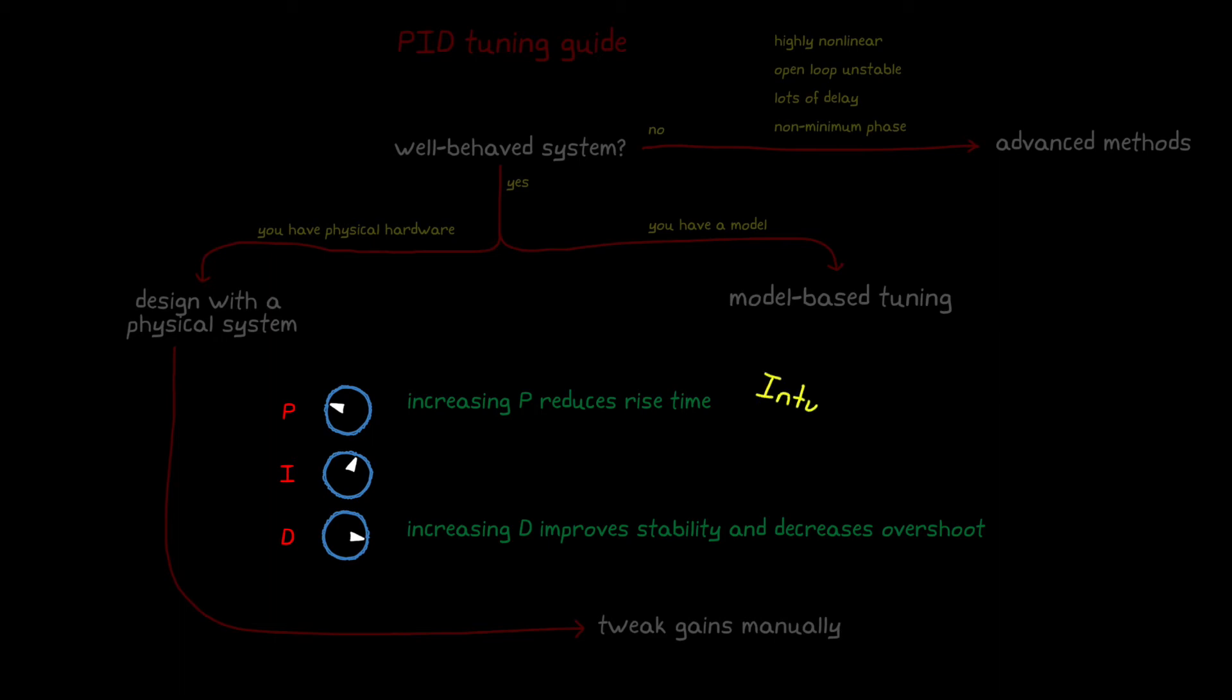And that allows you to adjust them in a way that isn't just trial and error. I've put a link in the description below for a handy chart that describes how the P, I, and D terms each affect different requirements.